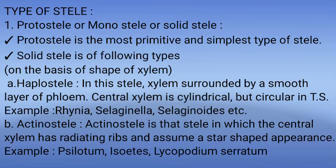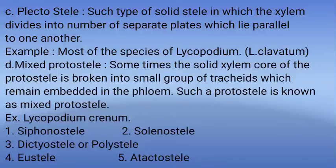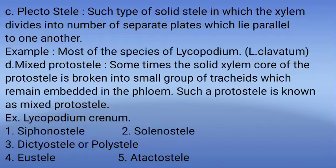2. Actinostele — Actinostele is that stele in which the central xylem has radiating ribs and assumes a star-shaped appearance. Example: Psilotum, Isoetes, Lycopodium, Serratum. 3. Plectostele — Such type of solid stele in which the xylem divides into a number of separate plates which lie parallel to one another. Example: Most species of Lycopodium, Lycopodium clavatum. 4. Mixed Proto-Stele — Sometimes the solid xylem core of the Proto-Stele is broken into small groups of tracheids which remain embedded in the phloem. Such a Proto-Stele is known as Mixed Proto-Stele. Example: Lycopodium cranium.